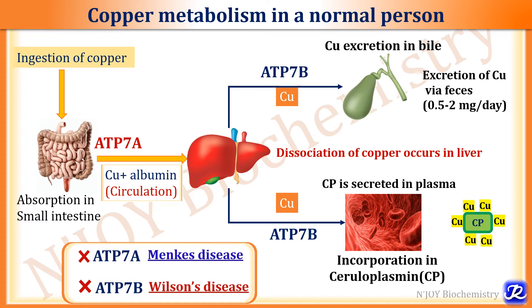If there is a mutation in the gene ATP7A, it results in Menkes disease, and if there is a mutation in the gene ATP7B, it results in Wilson's disease.